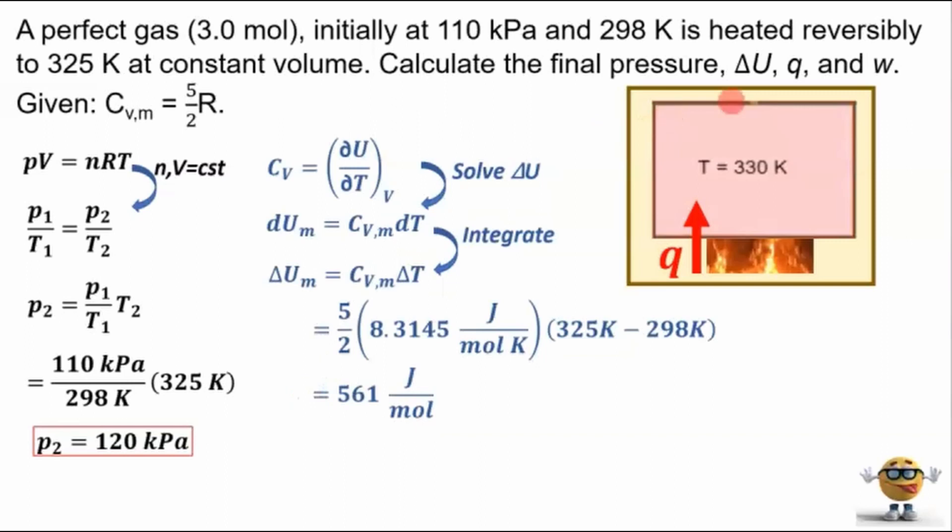We don't want the change in the molar internal energy. We want the change in the internal energy. So we don't want it per mole. We want it per three moles. So we'll multiply it by three to give us the change in the internal energy plus 1,680 joules. And it's nice to put the plus in here, which signifies that the system gains energy as heat.